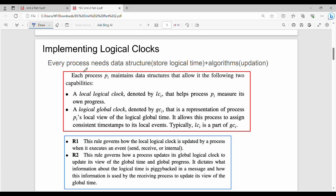Every process needs a data structure to store logical time. Data structure is a storage medium used to store my logical time. Then, additional algorithms or set of rules. The rules are used to update logical time.